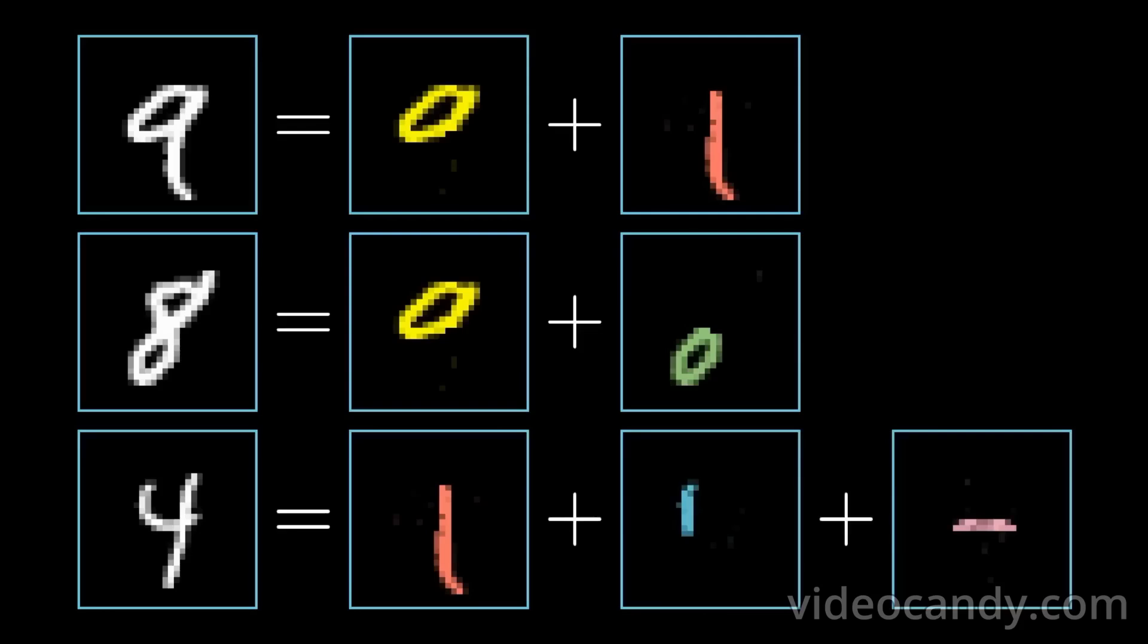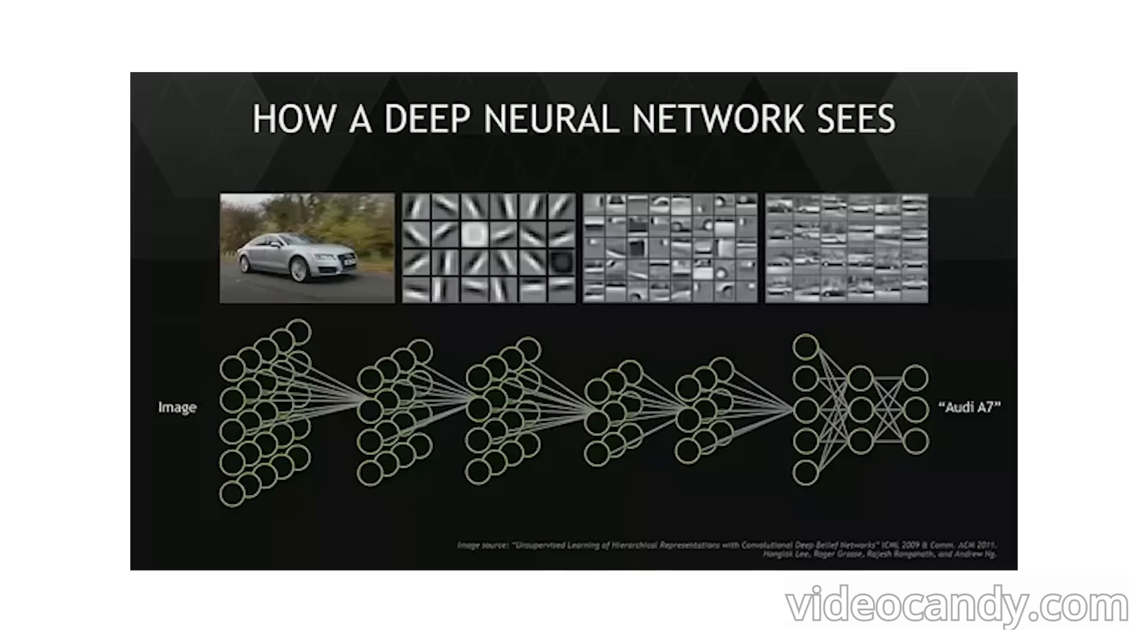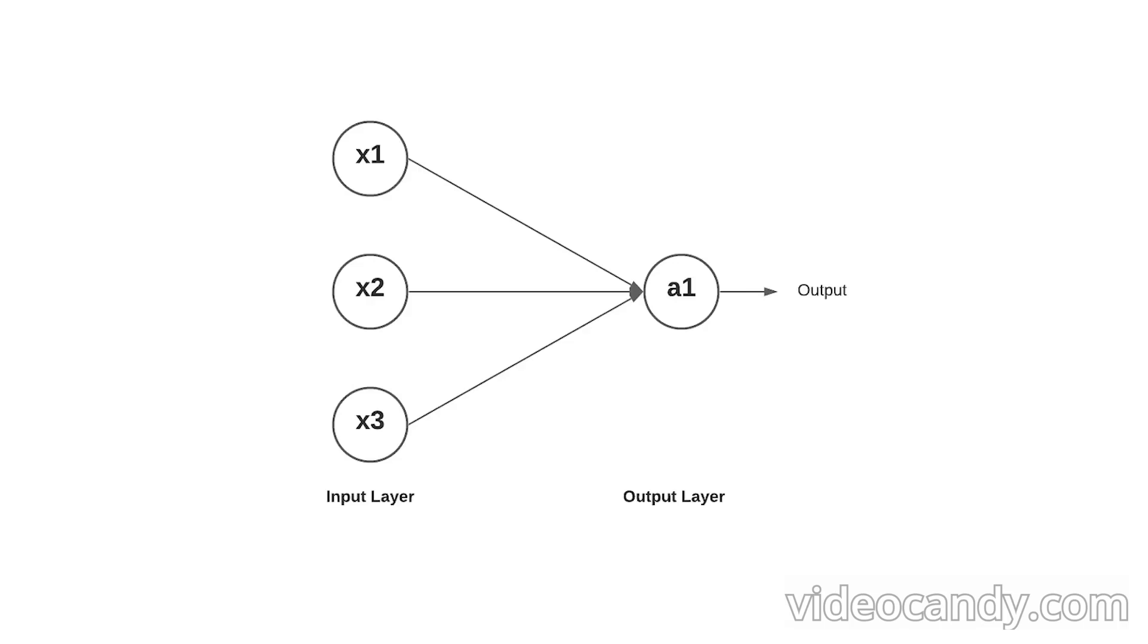But artificial neural networks, similarly to using a kernel function with a support vector machine, are designed to implicitly and automatically design these features for us, without any guidance from humans. We do this by adding additional layers of unknown variables between the input and output variables. In its simplest form, this is called a single-layer perceptron, which is basically just a multi-feature regression task.